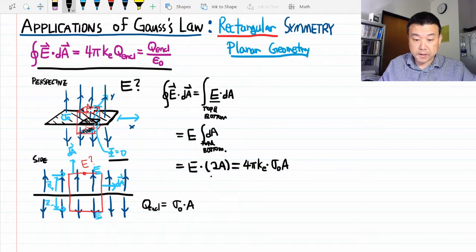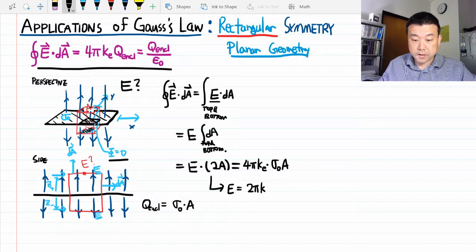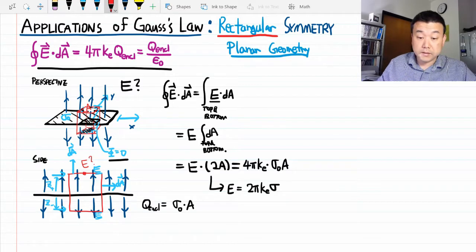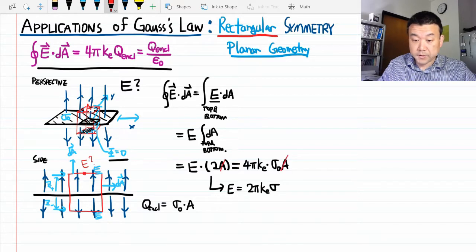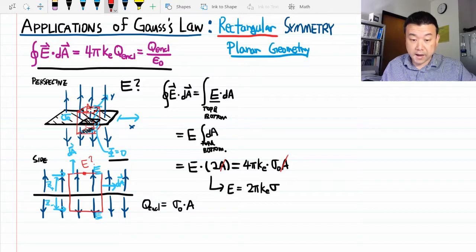Solving for the electric field, I get 2 pi ke sigma. The areas, the arbitrary parameters, having been canceled out.